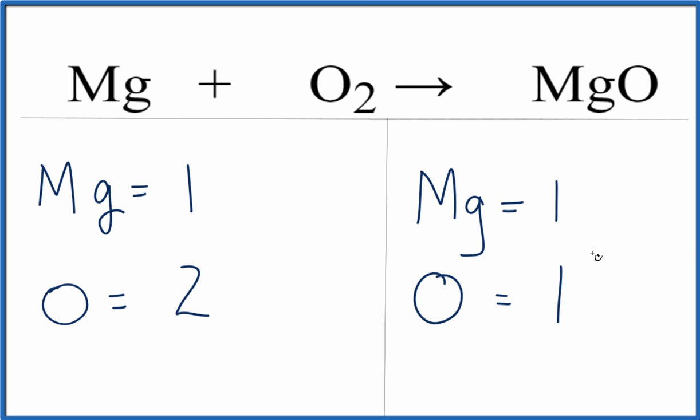What we can do is if we want to make the oxygens equal, we could put a 2, our coefficient, in front of the MgO. Now we have one times two, that equals two. So our oxygens are balanced, but this two applies to everything here.